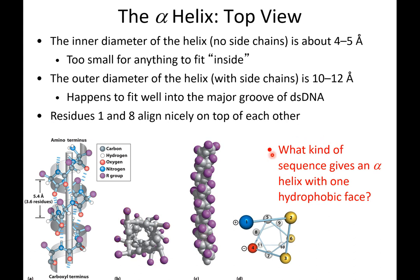Let's think about what kind of sequence would give an alpha helix with one hydrophobic face. Remember, every four amino acids they're going to interact in hydrogen bonds. If we wanted one side of the alpha helix to be hydrophobic, then amino acids 3, 2, 6, 9, and 10 would be hydrophobic residues. If we wanted this side to be positively charged to interact with something else, then this side would have residues like lysine or arginine — amino acids positively charged at neutral pH.